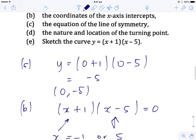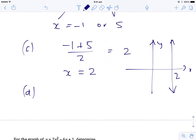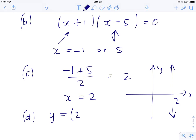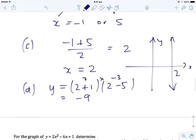D, the nature and location of the turning point. Well, we know the turning point is going to be on this line x equals 2. So to find the y value, we just substitute x equals 2 into the equation. So we've got 2 plus 1 times 2 minus 5. And that gives us 3 times negative 3, which is negative 9. So the turning point here is 2 negative 9.